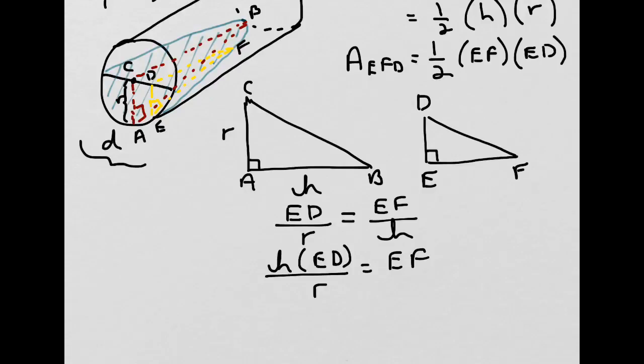So what we have is a relationship between sides ED and EF of the triangle EFD. And what we could do is substitute this value of EF back up into the formula for the area of triangle EFD, so that the area formula is represented by just one variable.